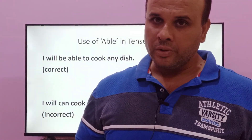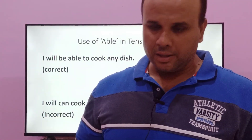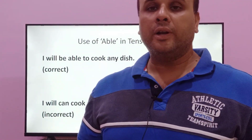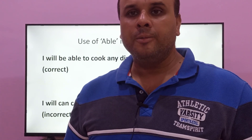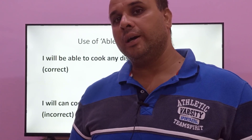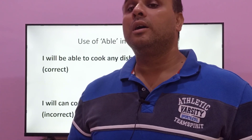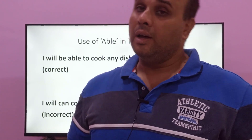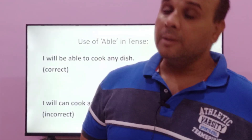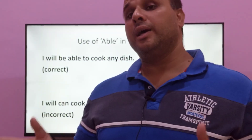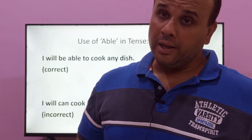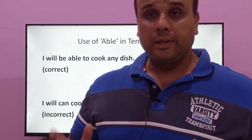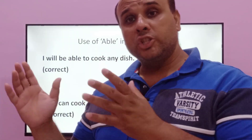So 'I will be able to cook any dish' — this one is correct. Today we have covered: the meaning of 'able,' its role as an adjective in parts of speech, and the concept that 'able' and 'can' are not the same — 'can' relates more to knowledge while 'able' relates to skill or capability.